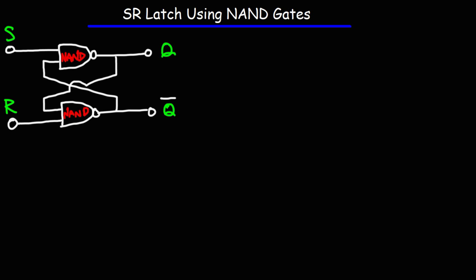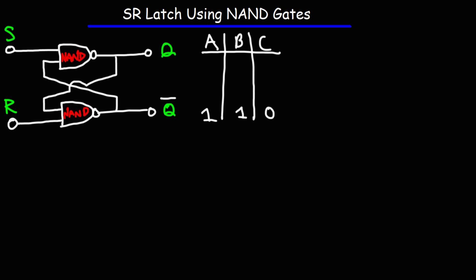Let's begin with the truth table for a NAND gate. So let's say we have the inputs A, B, and the output C. The way I like to remember it: for an AND gate, when A and B are on, the output will be on. The reverse is true for a NAND gate — when A and B are on, the output will be off. In all other cases, the output will be on. So that's the truth table for a NAND gate.